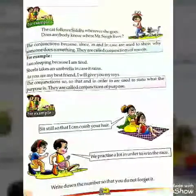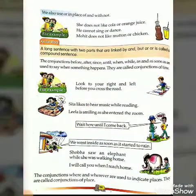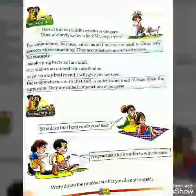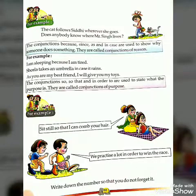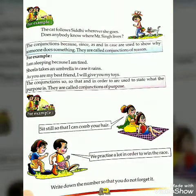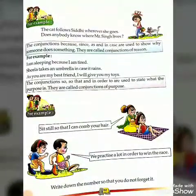On page number 51, we studied conjunction of place. For example: 'The cat follows Siddhi wherever she goes.' Here the conjunction 'wherever' indicates place. Another example: 'Does anybody know where Mr. Singh lives?' Here the word 'where' is a conjunction of place, indicating where Mr. Singh lives.